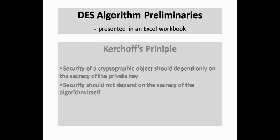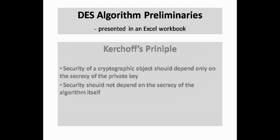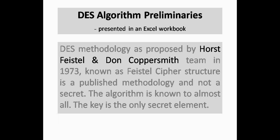Security of a cryptographic object should depend only on the secrecy of the private key. Security should not depend on the secrecy of the algorithm itself. This methodology proposed by Horst Feistel and Don Coppersmith's team in 1973, known as Feistel cipher structure, is a published methodology and is known to almost all. The key is the only unknown element.